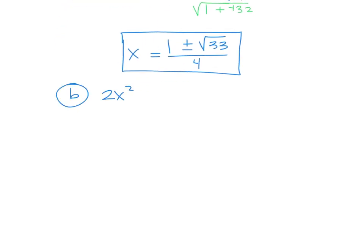Let's say we have 2x squared minus 2x equals 3. Right now this is not in the right format. What do we need to do? You need to move the three over. So you're going to do 2x squared minus 2x minus 3 equals zero.